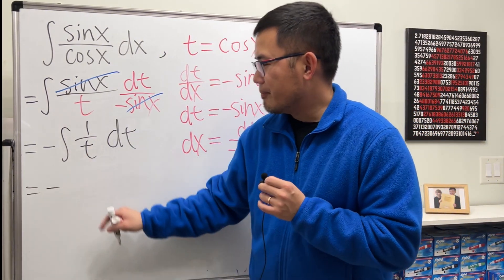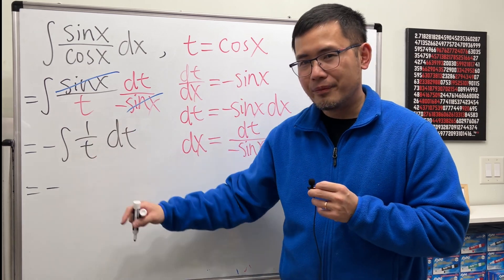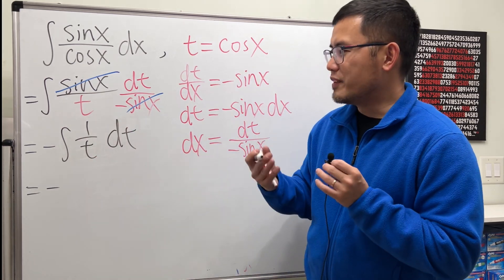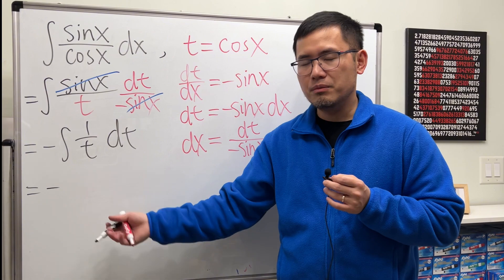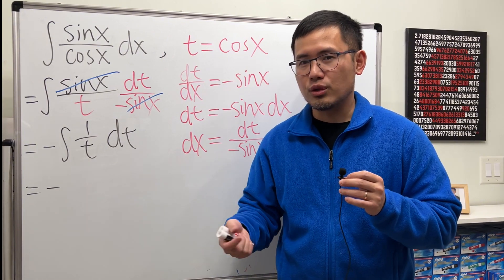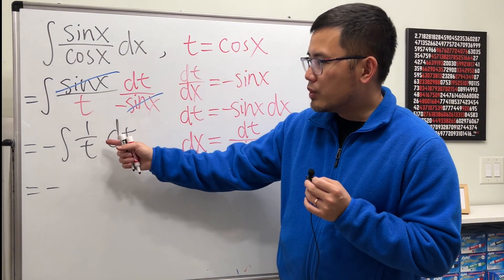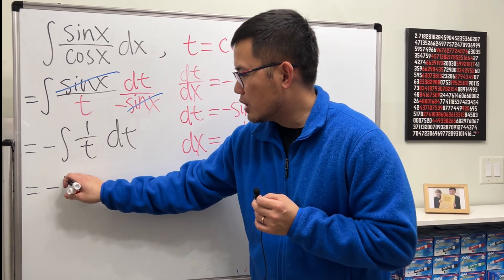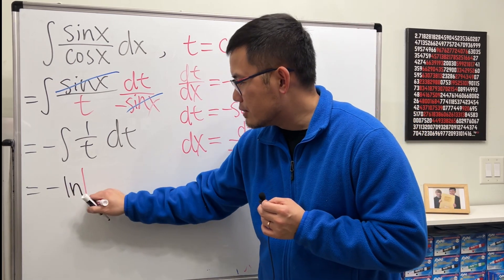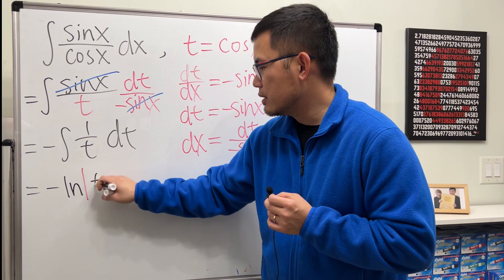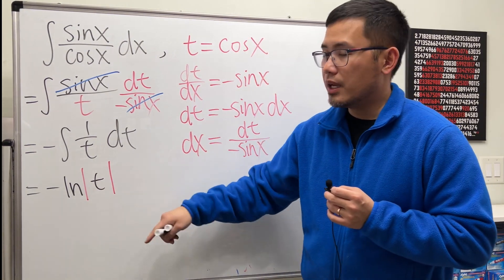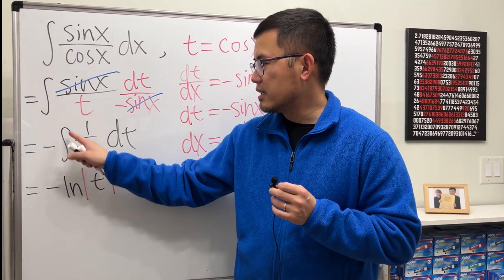The negative stays. And the integral of 1 over t, you ask yourself, the derivative of what function will give you 1 over t? And the answer for that is natural log of t. But when we do the indefinite integral, make sure you have ln absolute value, attached to absolute value of t.